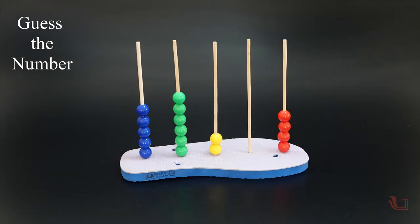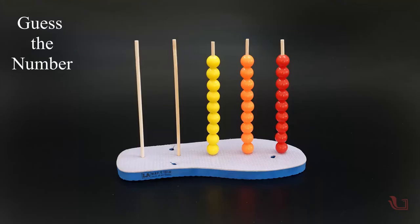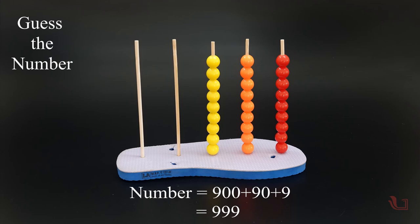Now, your friend will rearrange the beads in the sticks and will ask you to calculate the total value of all the beads according to their place values. Here, the total value of all the beads is 56,204. No beads in a stick means the value is 0.